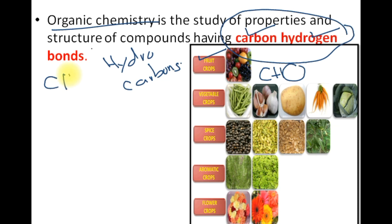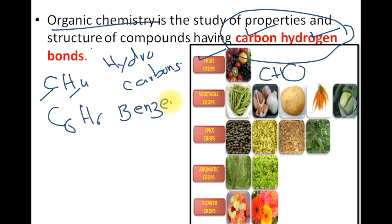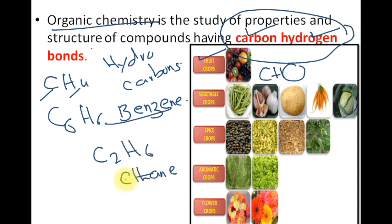For example, CH4 is methane gas, in which there is carbon and hydrogen — that is a hydrocarbon, which means it is an organic compound. Furthermore, C6H6 is called benzene; benzene also contains carbon and hydrogen, so it is an organic compound. Similarly, C2H6 is called ethane, and ethane is also an organic compound.